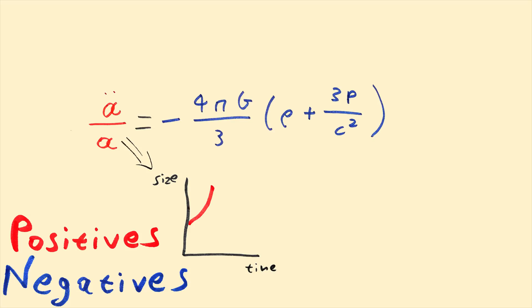Without lambda, the A double dot term would be negative, because the density, rho, and the pressure, p, of the universe, both slow down the expansion. But overall lambda wins, and we have an accelerated expansion of the universe.